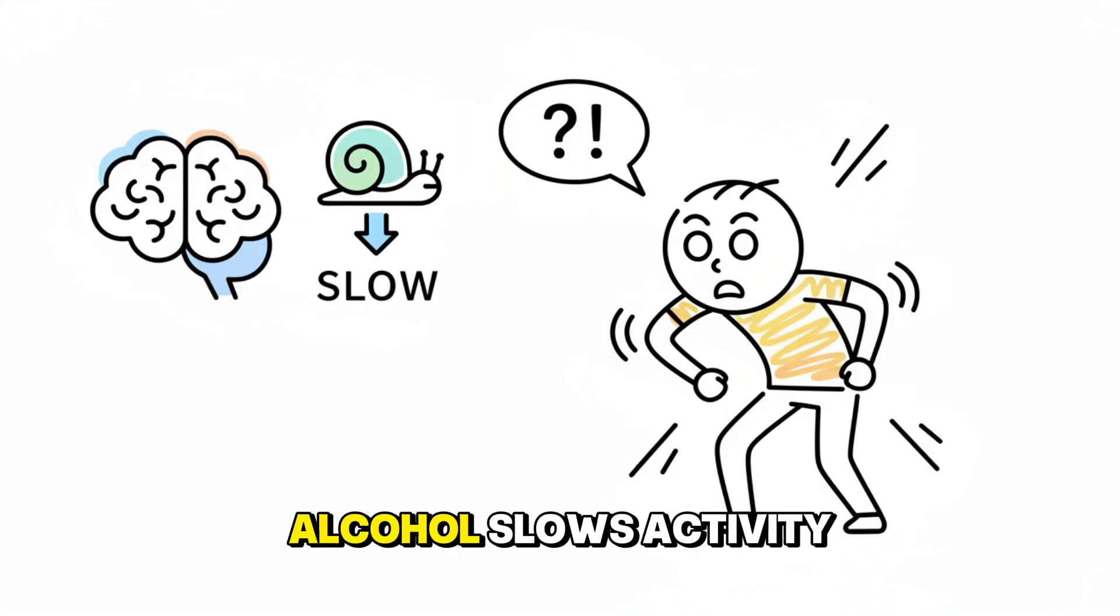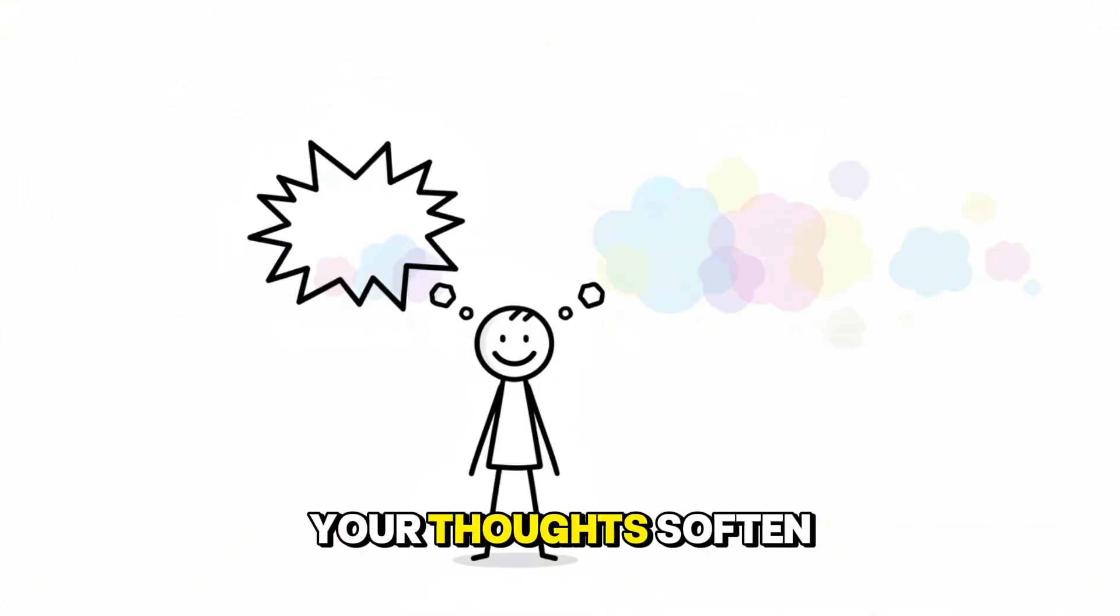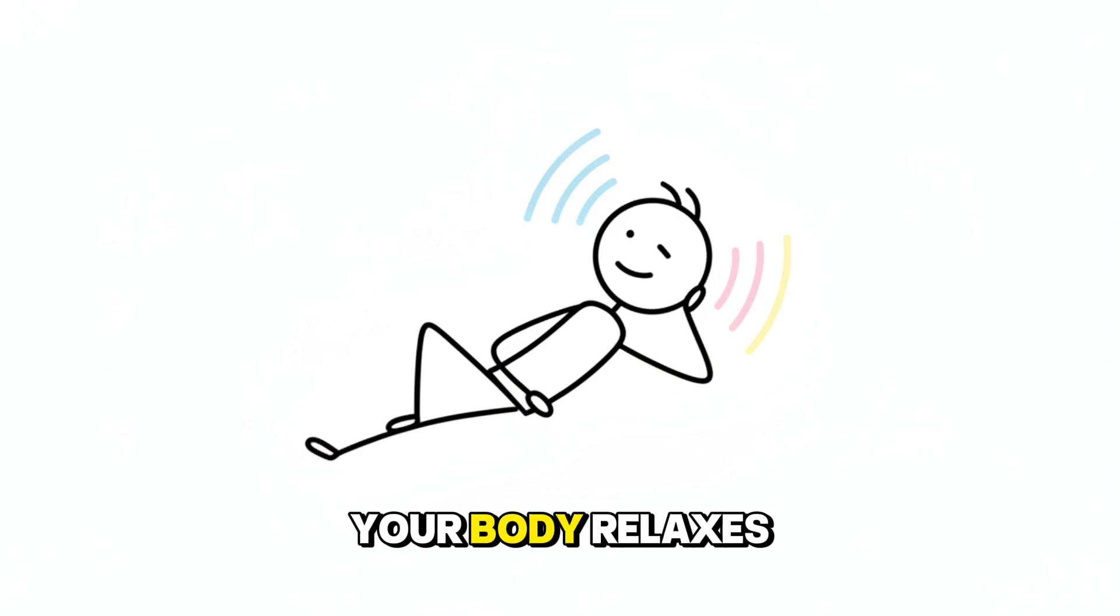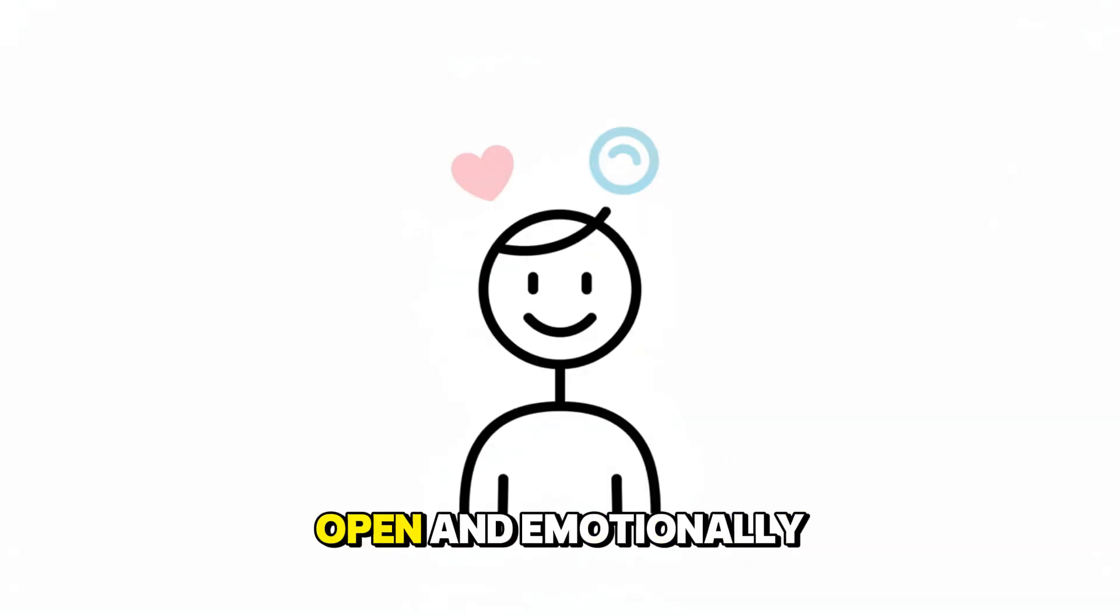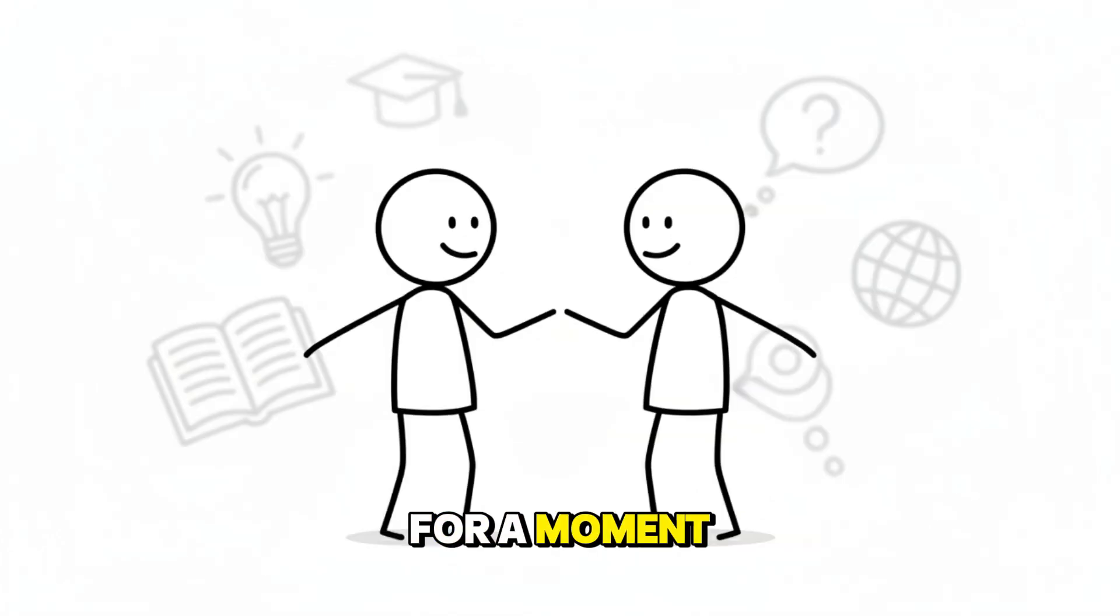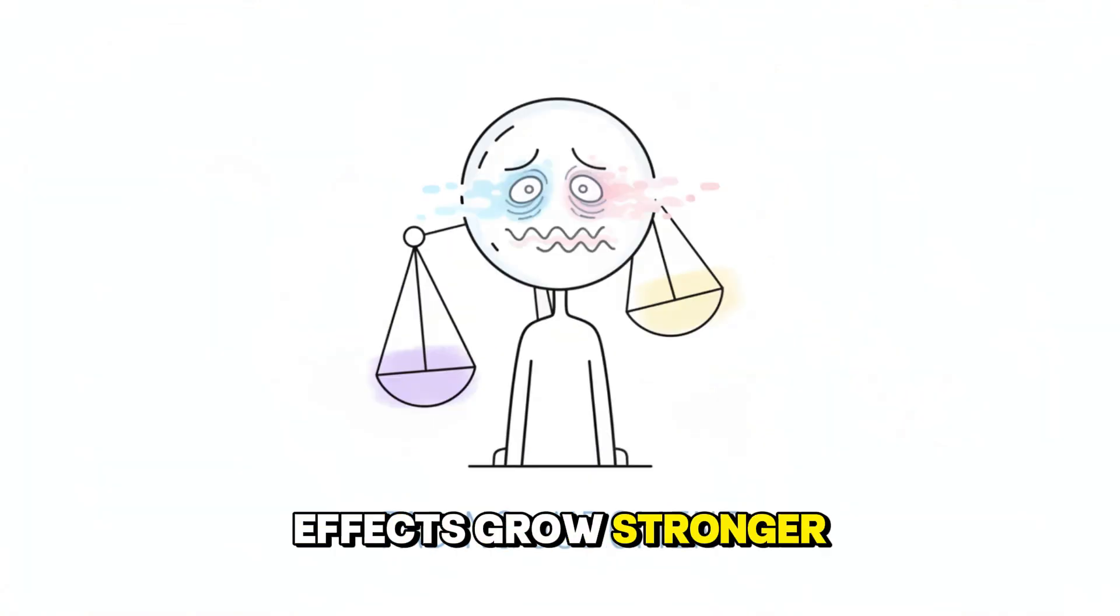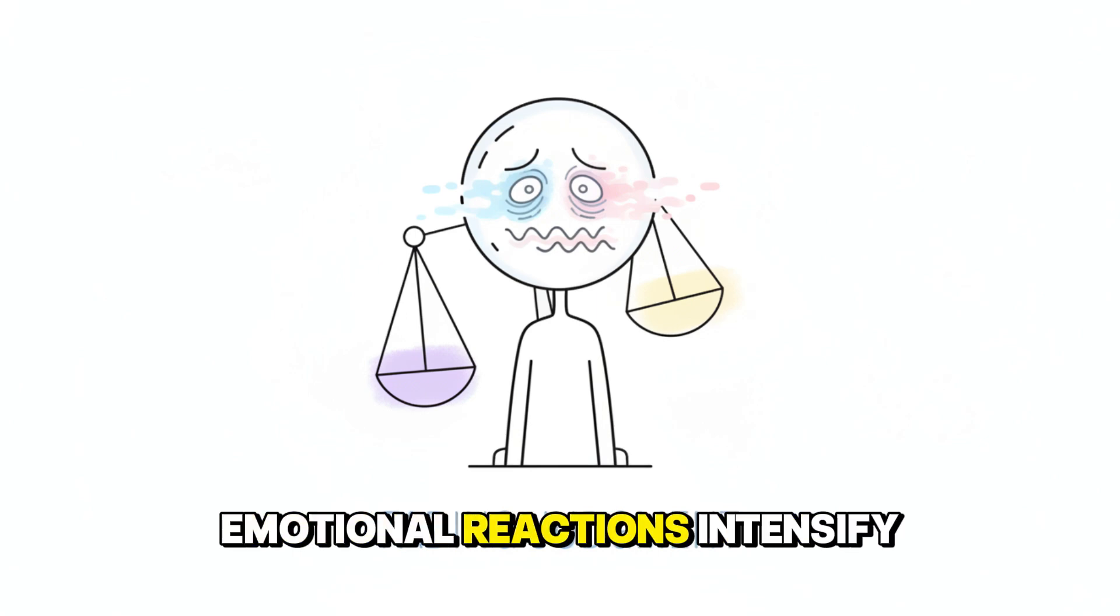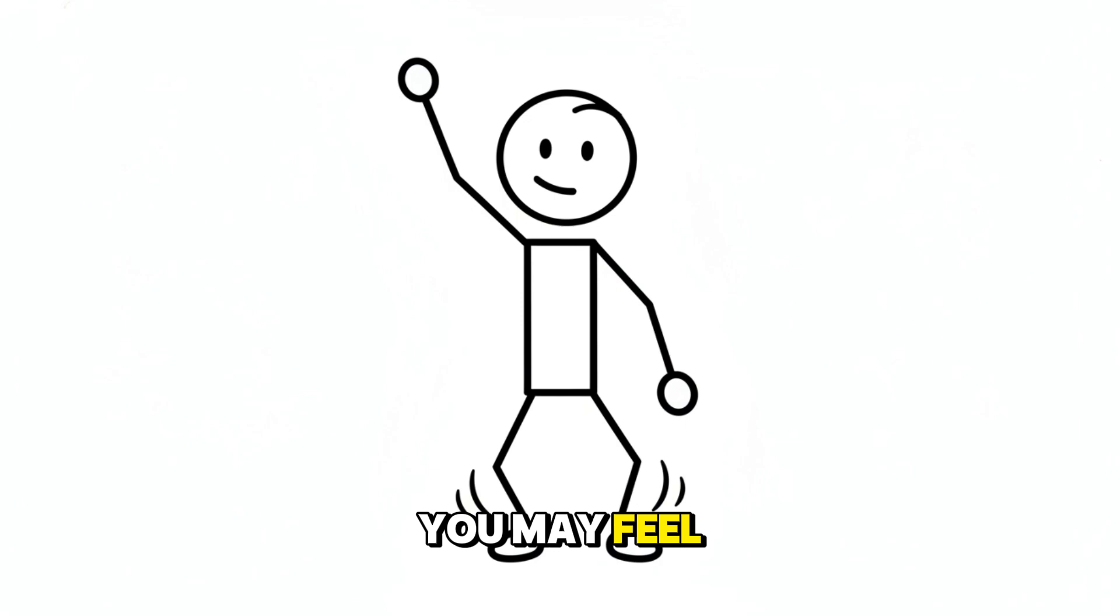Alcohol slows activity in the brain and nervous system, but early on, it feels the opposite. At the beginning, your thoughts soften, your body relaxes. You feel socially open and emotionally lighter. For a moment, it feels like connection is easier and the world becomes less sharp. But as the effects grow stronger, judgment fades and emotional reactions intensify. You may feel confident, expressive, and convinced you're fully in control, even when coordination and regulation are declining.